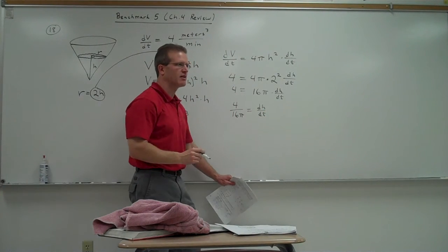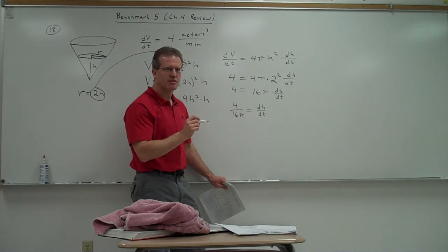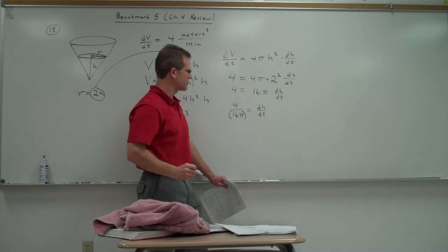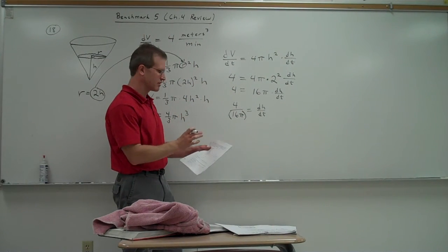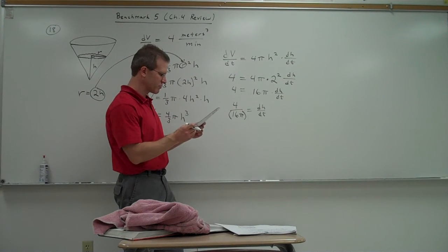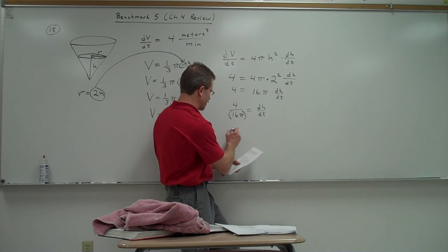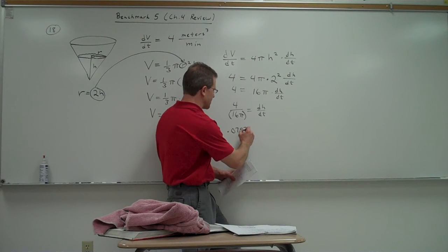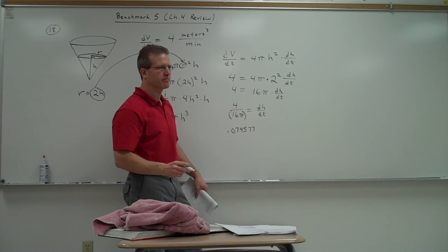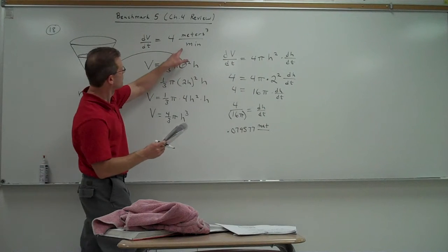Now, if you want to get an actual decimal answer, take 4 divided by 16 pi. But the calculator is not going to know that you want pi in the denominator unless you tell it that by putting parentheses here. So make sure you take 4 divided by and parentheses 16 pi. Otherwise, it's going to think you're taking 4 sixteenths times pi. So those parentheses are important. And then the answer comes out 0.079577. Go out at least 3 decimal places. And what would be the label on that? If it's a change in height over a change in time? Meters per minute. Meters per minute.